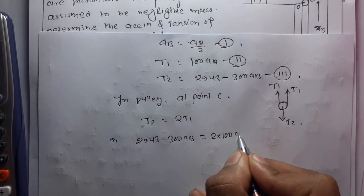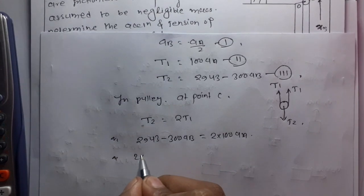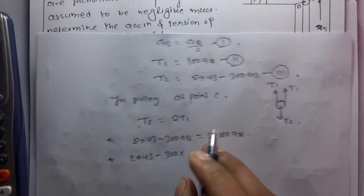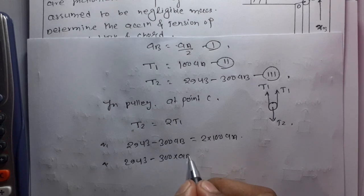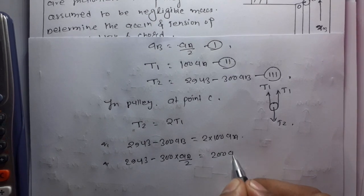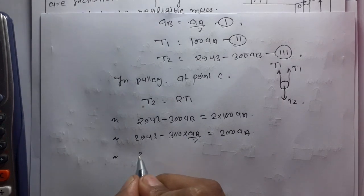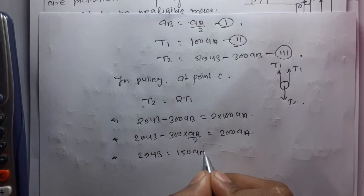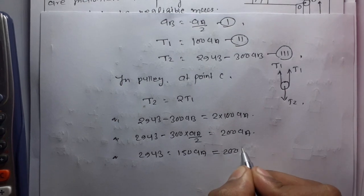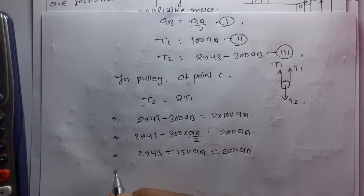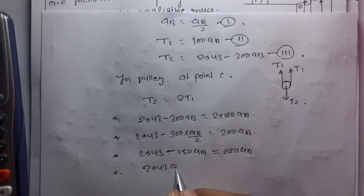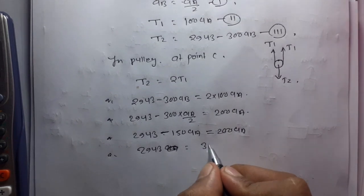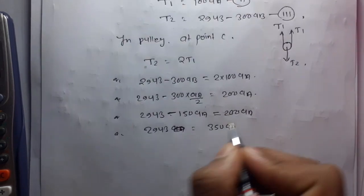Also, using the pulley relationship T2 equals 2T1, substituting: 2943 minus 300 times (aA over 2) equals 2 times 100 aA. This gives 2943 minus 150 aA equals 200 aA, so 2943 equals 350 aA.